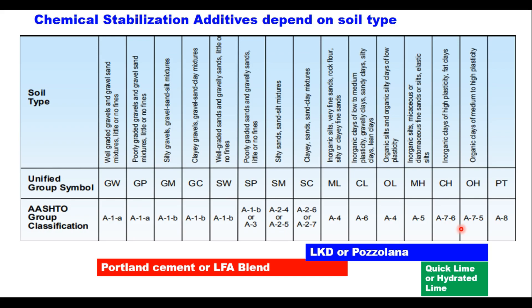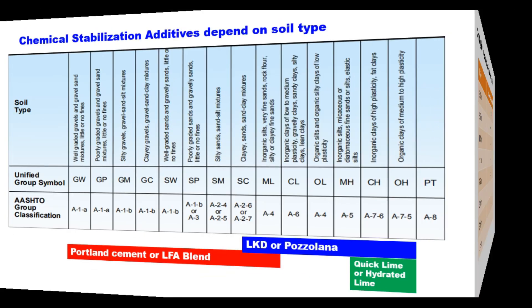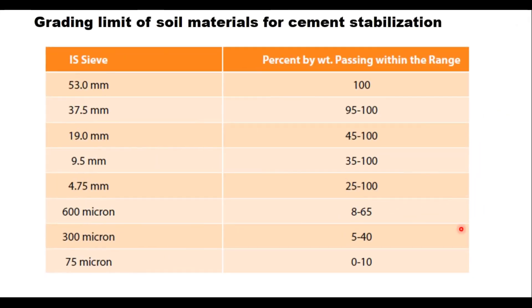The aggregate-soil mixture should satisfy the gradation given in the relevant table. The maximum size of aggregate is 53 millimeters, the nominal size is 37.5 millimeters, and it should conform to the grading as specified.